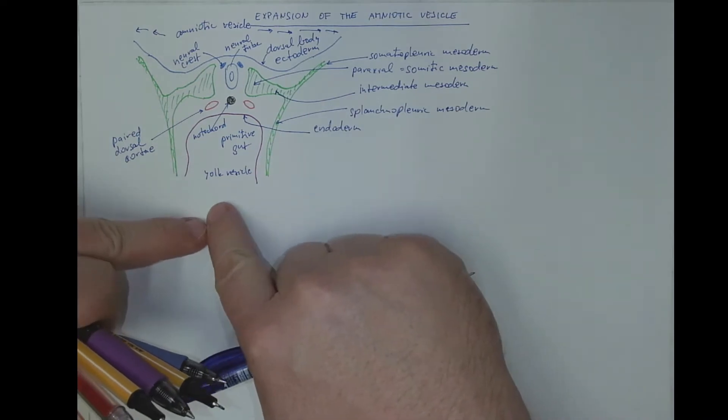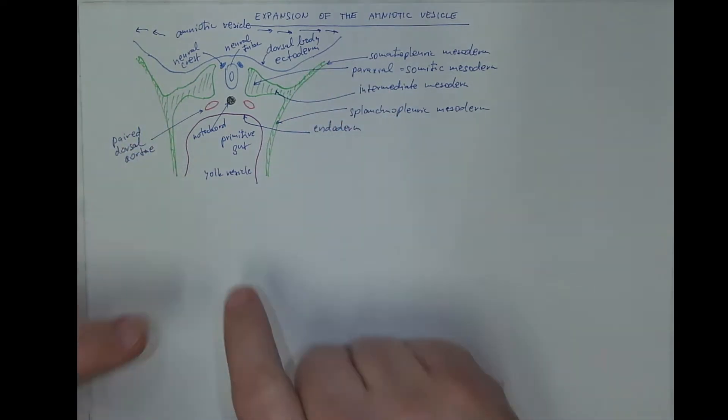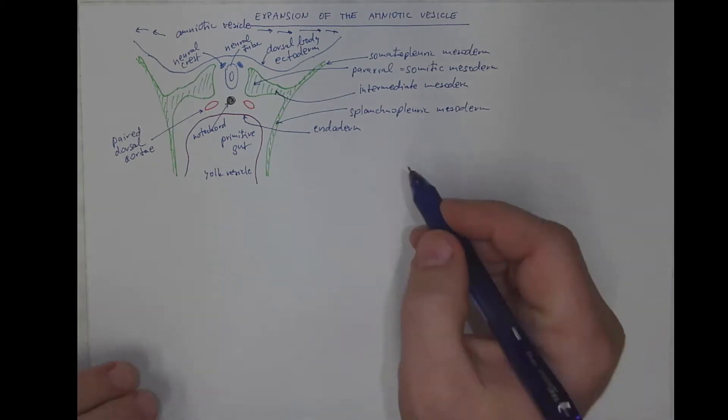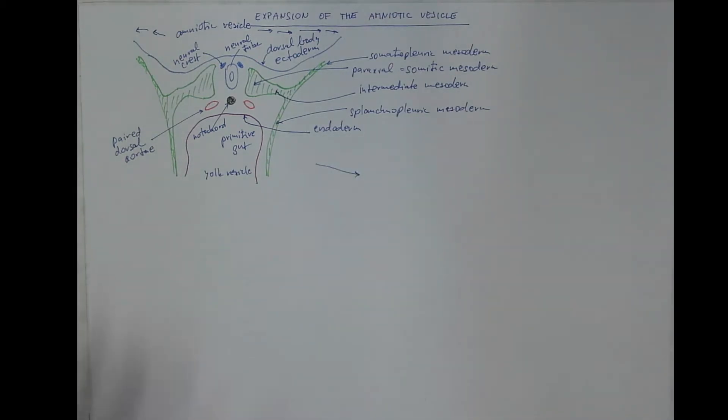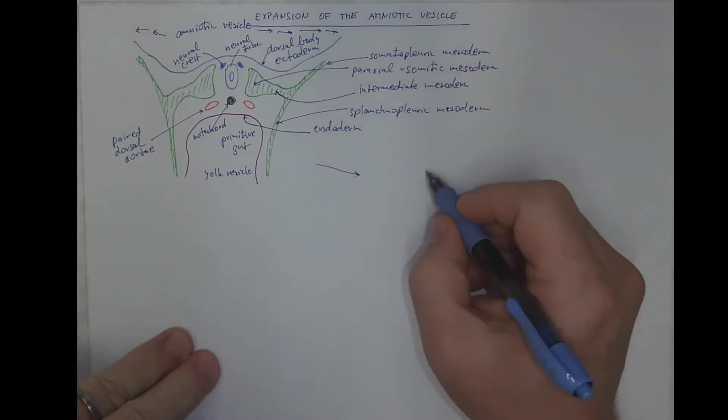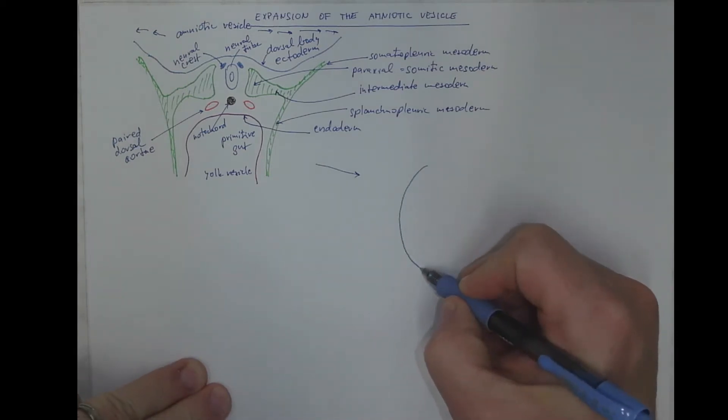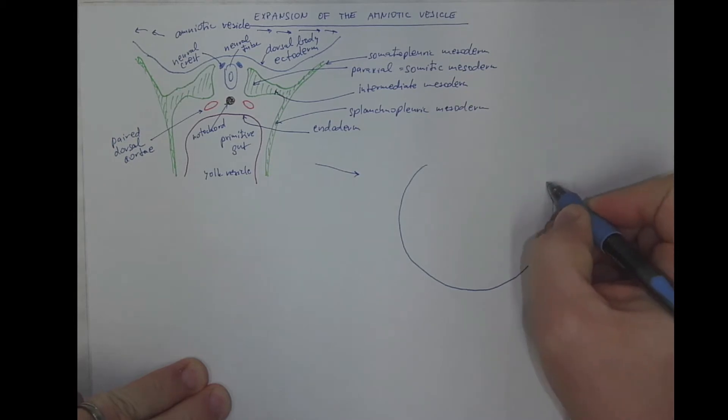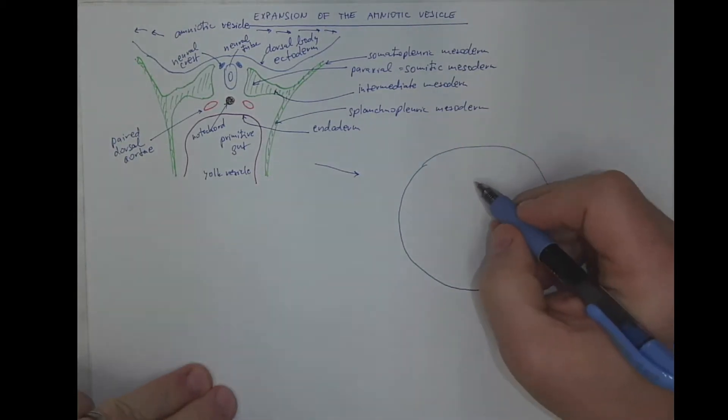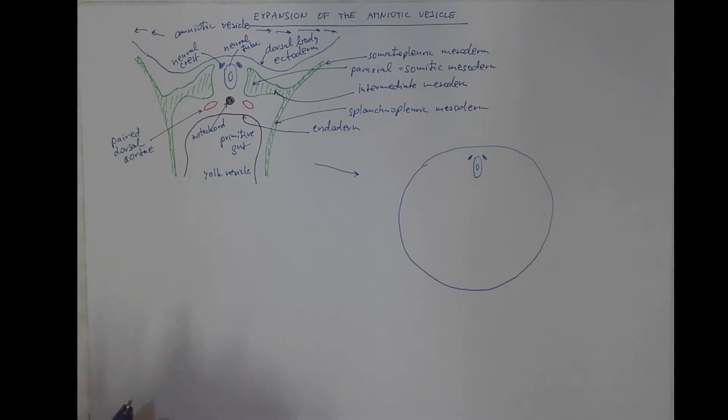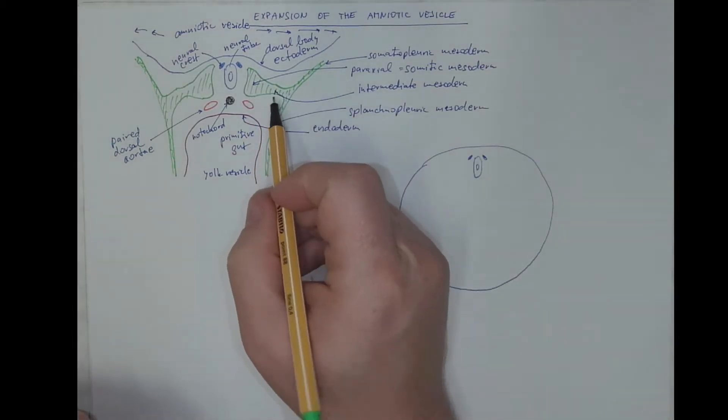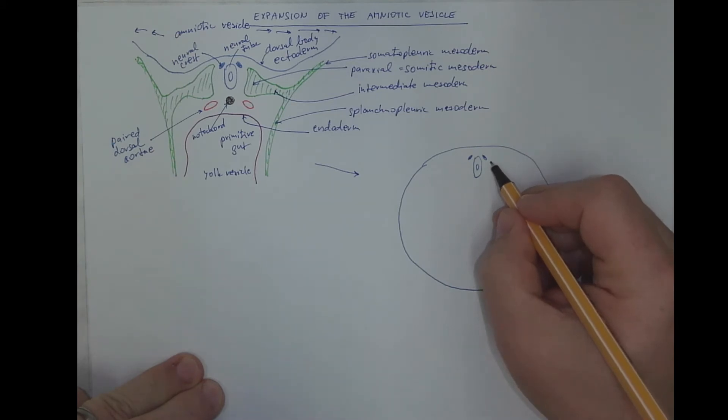It will become the primitive gut. And it will close ventrally the ventral body wall. So after this closure, driven by the expanding amniotic vesicle, this embryo will already resemble the basic body form. The ectoderm with dorsally having the neural tube accompanied with neural crest.